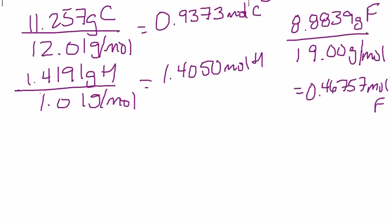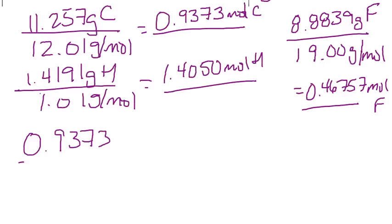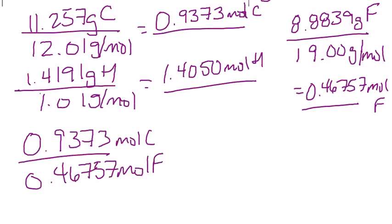Now that we have those, we take the largest one, or actually we divide the two bigger ones by the smaller one. So, 0.9373 divided by, and that's the moles of carbon divided by 0.46757 moles of fluorine is equal to approximately two over one,